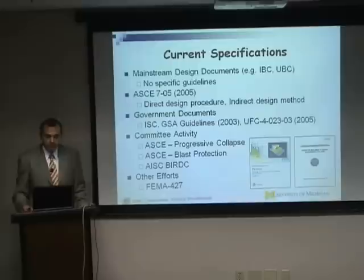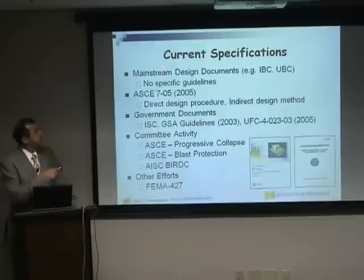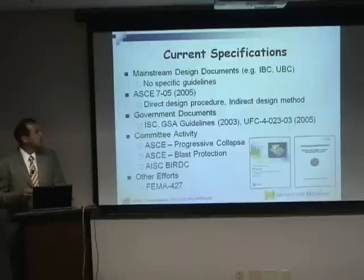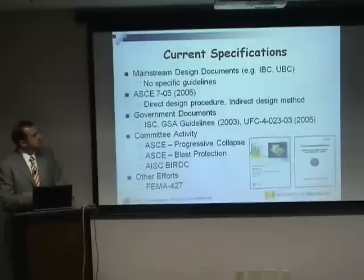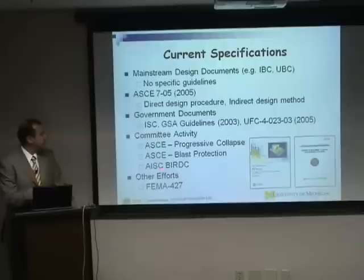After 9/11, there was significant effort to develop guidelines for collapse-resistant structures. However, mainstream design documents like the IBC or UBC have no real progressive collapse provisions — just general recommendations to make buildings ductile and well-connected. Government documents are much more advanced: the General Services Administration in 2003 and the DOD Unified Facilities Criteria have very explicit criteria. There's also committee activity within ASCE and AISC going in this direction.